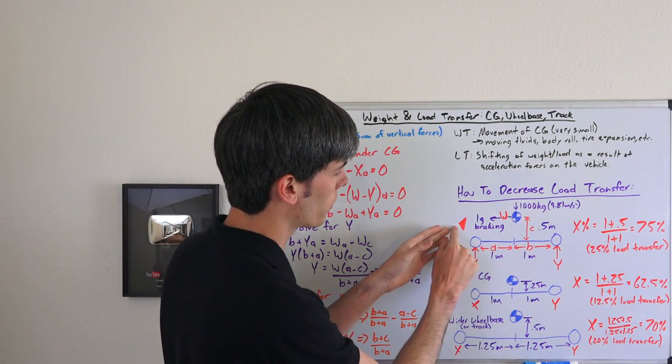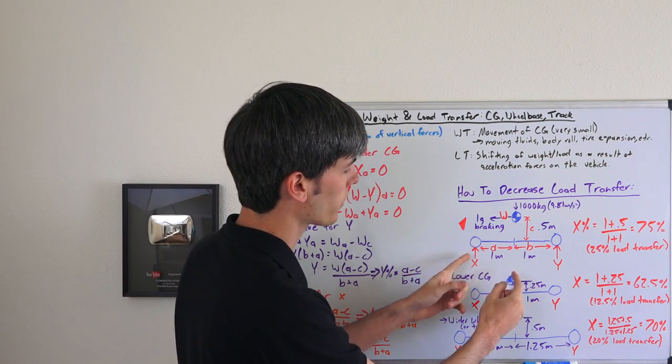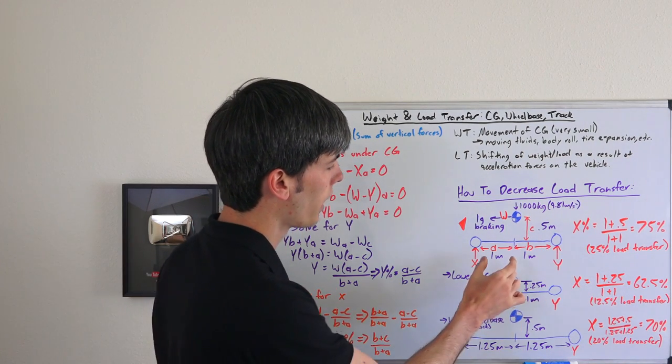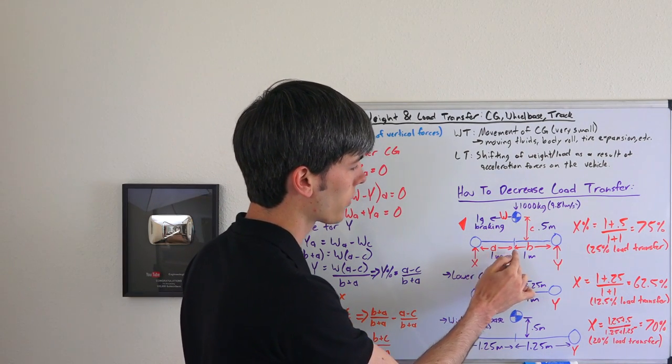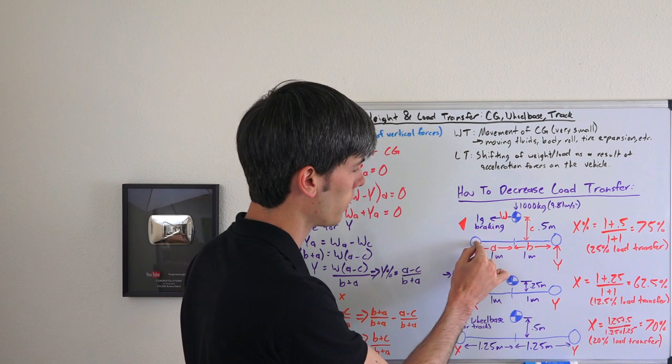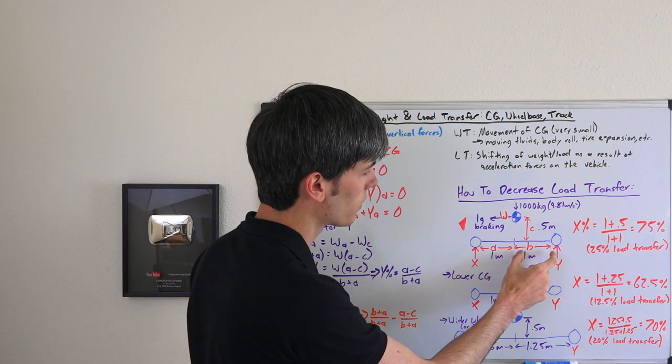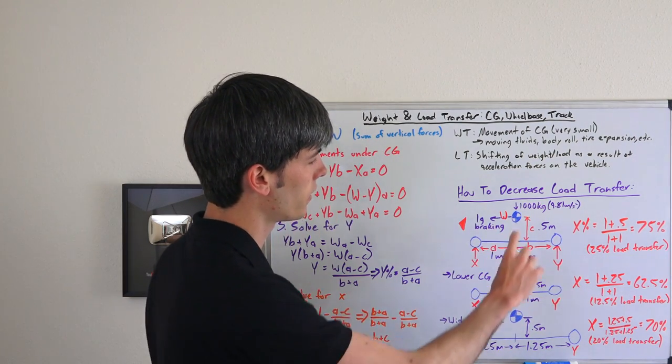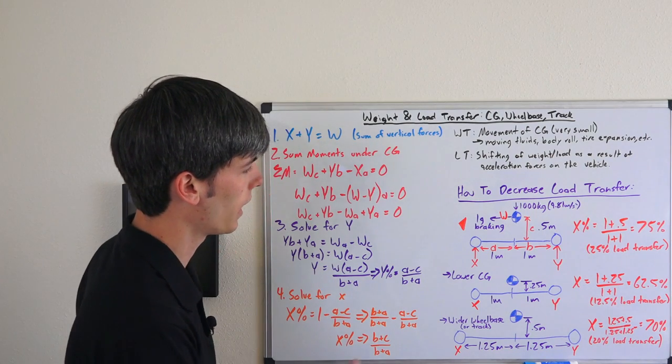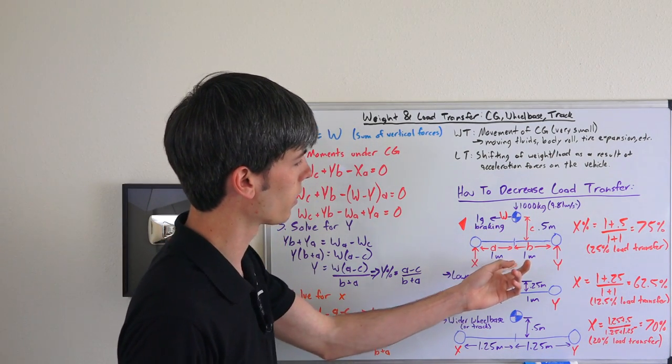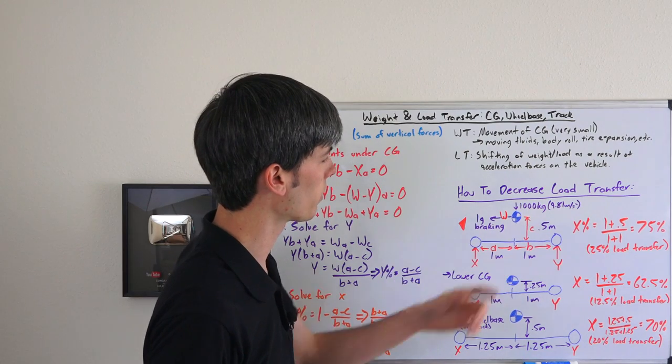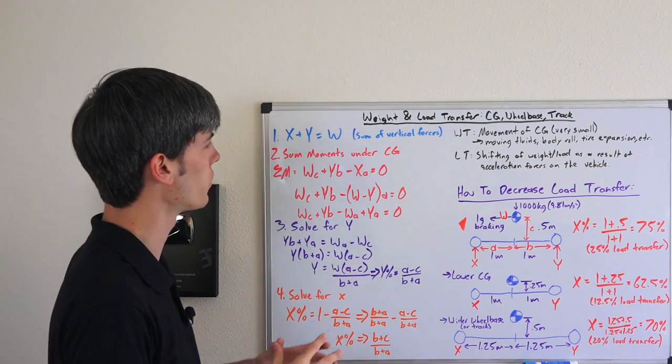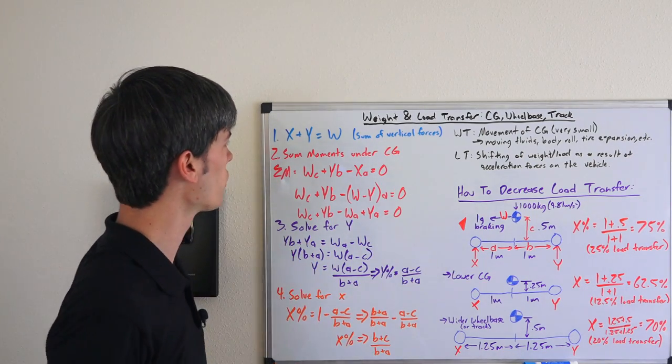So here we have a model of the car, this is the front of the car as I've denoted here. X is the force pressing up on the front tire, Y is the force pressing up on the rear tire, a is the distance between X, basically the center of this tire, and the center of gravity, b is the distance between center of gravity and the force Y, and then c is the height of the center of gravity. In this case we have it dead center with one meter a, one meter b, and half a meter for c. We're going to do some quick derivations here without numbers and then we can apply those equations to this.